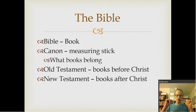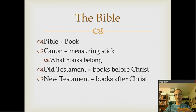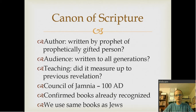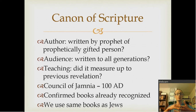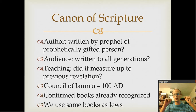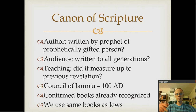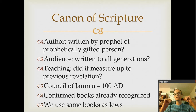The Old Testament is basically all the books that were written before Christ, and the New Testament is all those books that have to do with Christ's coming and after. There were a few different tests for the canon of Scripture. The first was authorship — it had to be written by a prophet or a prophetically gifted person. The Jews counted the writings of Moses and others as prophetic; Moses was considered one of the first prophets, so even though he's not a traditional prophet like Isaiah or Jeremiah, he was still seen as a prophet.